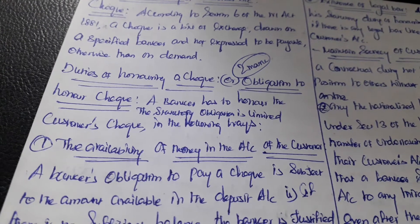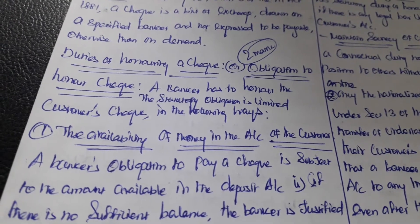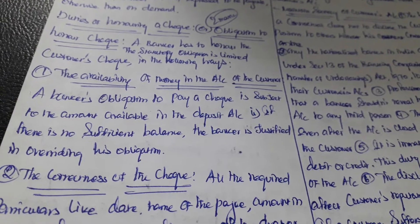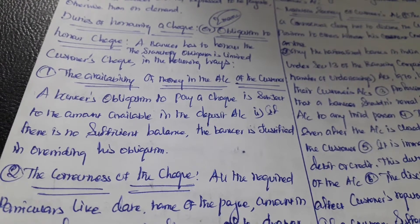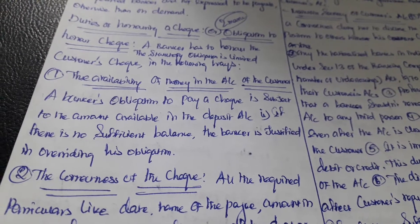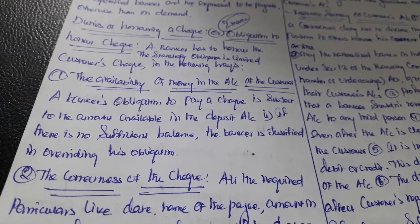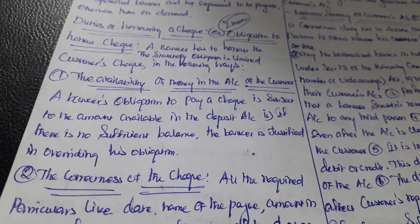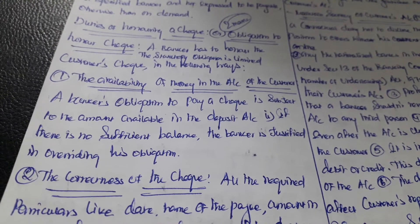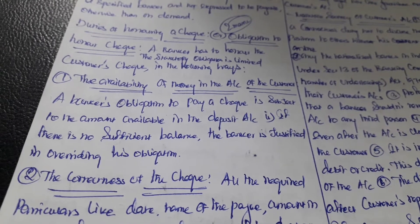The first obligation is the availability of money in the bank account of the customer. The banker's obligation to pay a check is subject to the amount available in the deposit account. The banker should examine the customer's balance; if there is no sufficient balance, the banker is justified in overriding his obligation. If the customer doesn't have enough balance, the banker will dishonor the check.